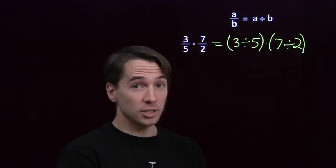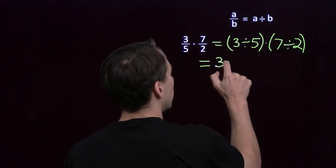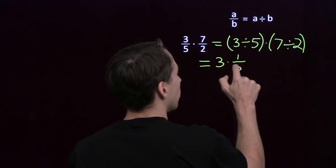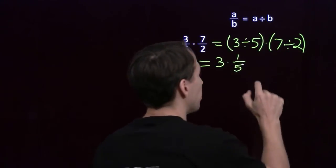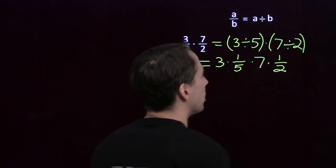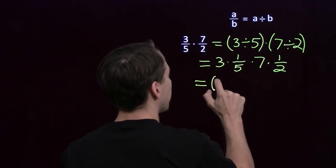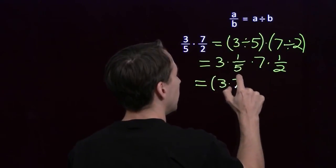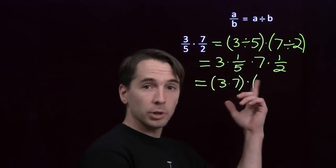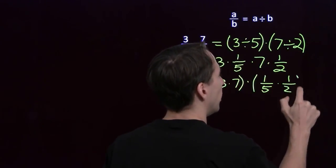So we've turned this into division and multiplication, because we can handle that. Now we'll turn each of these divisions into a multiplication, because we know that we can then reorder our multiplication. 3 divided by 5 is just 3 times the reciprocal of 5. 7 divided by 2 is 7 times the reciprocal of 2. Now we're going to reorder this, put this in an order we can handle. We're going to put the 3 and the 7 together. And we know how to multiply reciprocals. 1 over 5 times 1 over 2. We'll put those together as well.